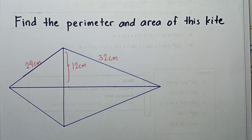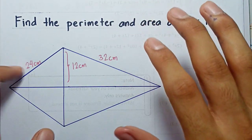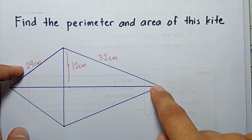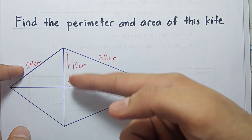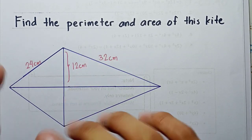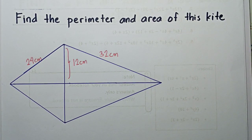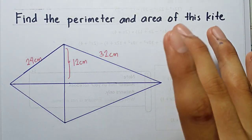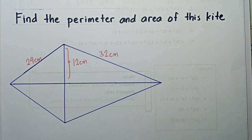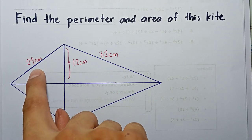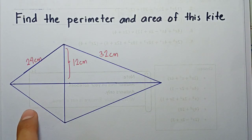Find the perimeter and area of this kite. I have a kite here that has 24 centimeters on this part and this side, and 32 on the other. The half of the diagonal is 12 centimeters. Using this information, let's find the perimeter and area. In finding the perimeter we can just add the measure of all the sides — this works on any type of polygon. We only have two sides already measured: 24 and 32.